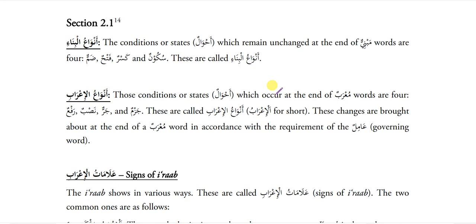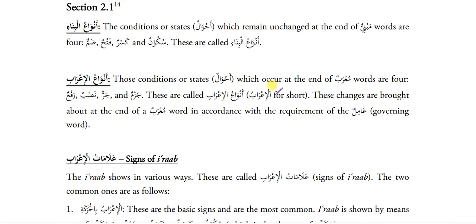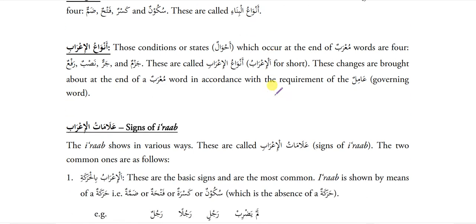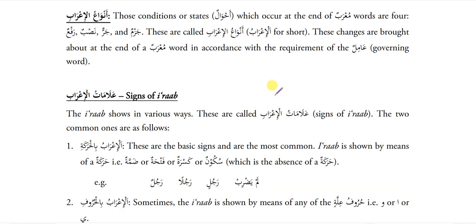The condition or state which remains unchanged at the end of Mabniy words are four: Sukoon, Kasra, Fatha and Zamma. These are called Anwa'ul-Binai. Some Arabic words have a fixed Arab. Sometimes that fixed Arab is Fatha, sometimes Kasra, Sukoon or Zamma. These are the types of Mabniy — whether a word is Mabniy with Fatha, Zamma, Kasra or Sukoon.